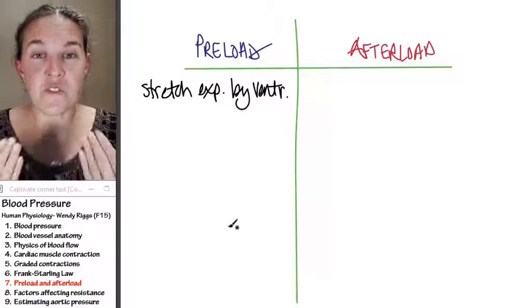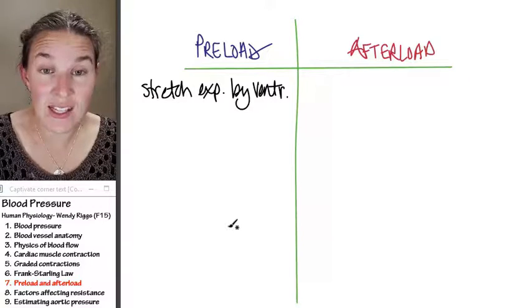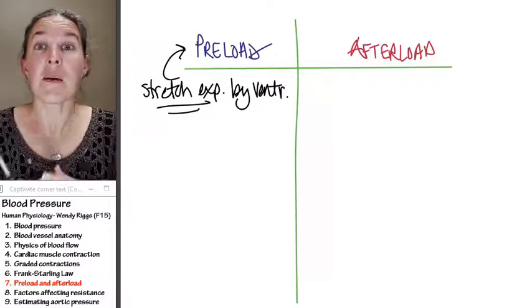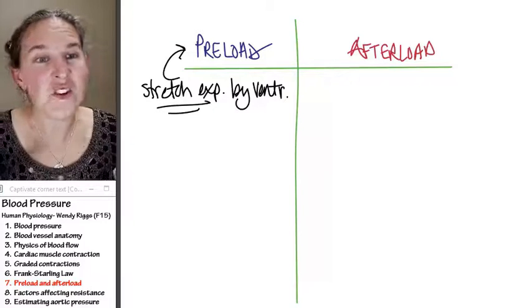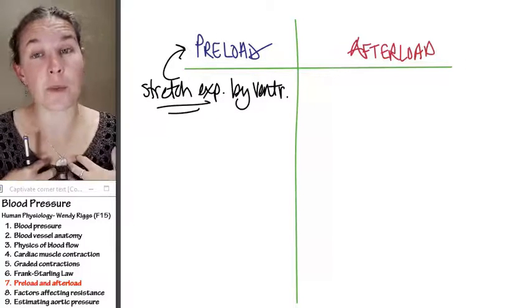So as the ventricles fill with blood, they stretch, and the amount of stretch that they experience, that is the preload. The bigger the preload, the greater the strength of contraction. Thank you, Erno and Otto, for helping us understand that.